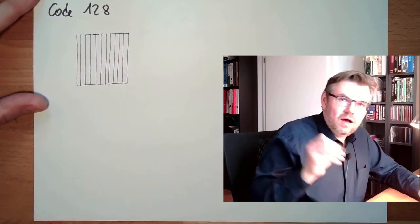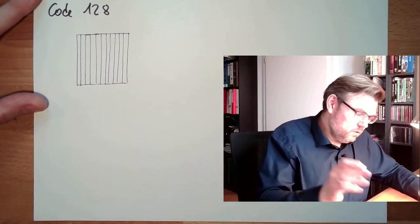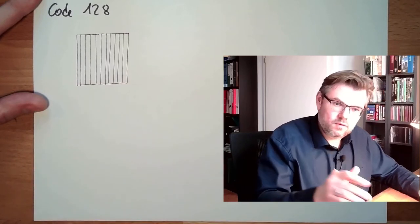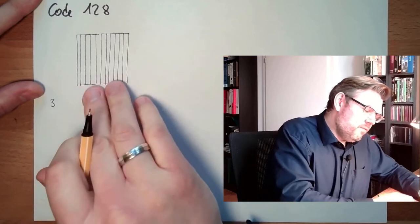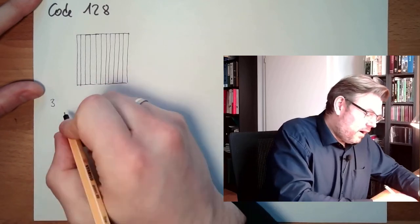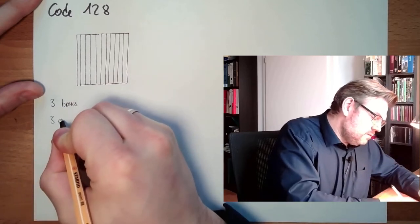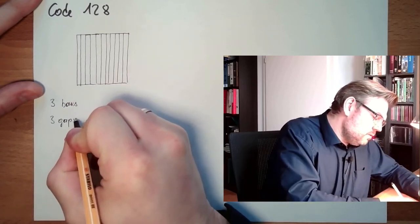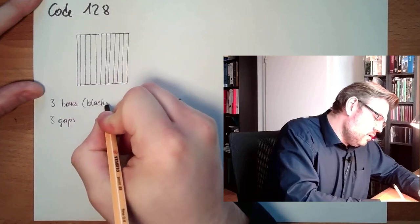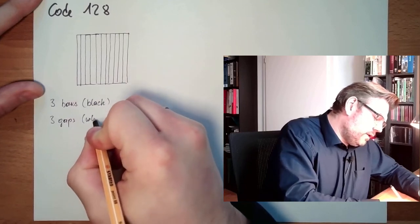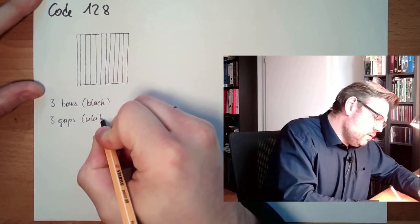Which of these modules are stripes or bars and which are gaps? We have not defined yet. Next rule. There are three bars and also three gaps. The bars are black and the gaps are white.